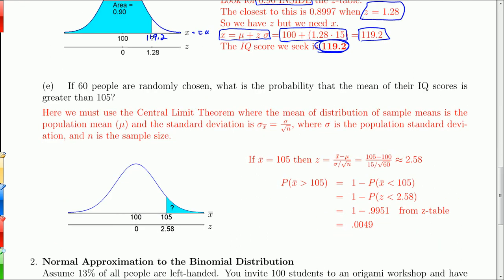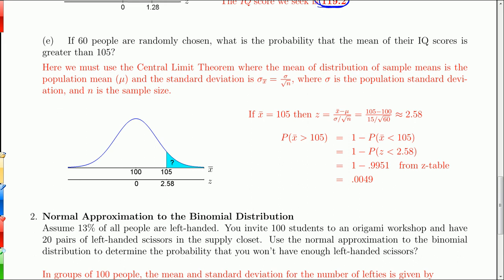Here we go to the central limit theorem where we have a sample. If 60 people are randomly selected, what is the probability that the mean of their IQ scores is greater than 105? The population mean is still 100, population standard deviation is 15. But I want to find the probability that a mean, X bar, is greater than 105. This looks just like the problems on the previous page, except that there's this X bar here. And that's going to change our Z score.